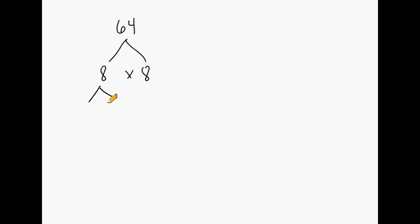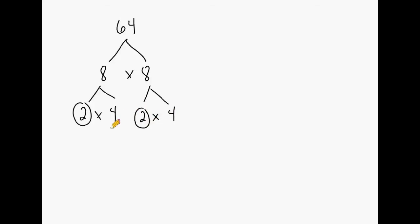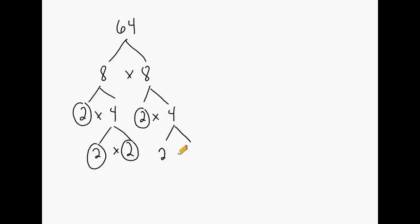8 may be broken down into 2 times 4. We can circle the number 2 because it is a prime number. Over here we still have to break down this 8, and we can do that by multiplying 2 by 4. We can circle this 2 as well. But the 4 on each side is composite, and we can branch out and break that down further. To get 4 we may multiply 2 times 2, and we can circle both of those 2's. We may break down the other 4 by multiplying 2 by 2 as well. When you have all prime numbers circled at the bottom, you may stop.